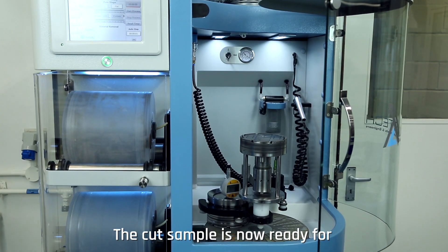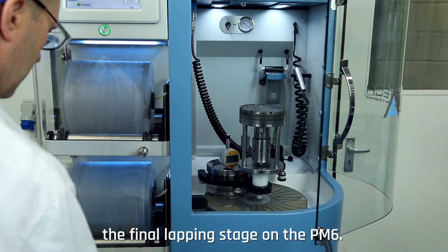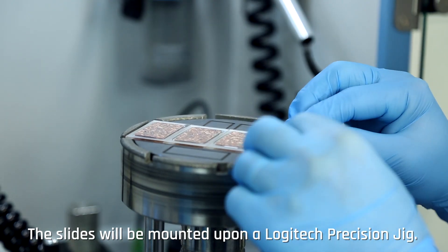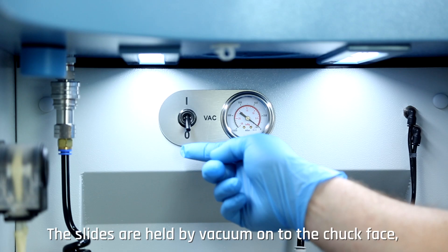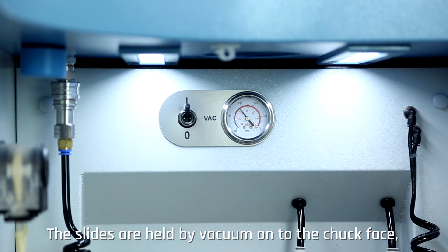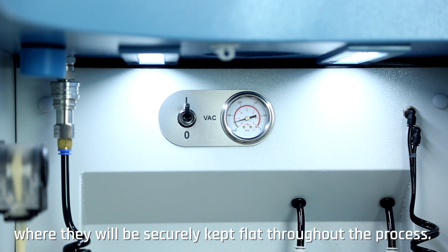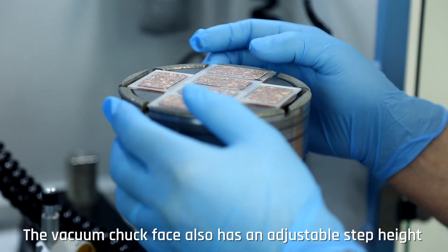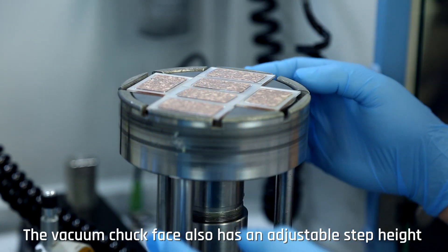The cut sample is now ready for the final lapping stage on the PM6. The slides will be mounted upon a Logitech precision jig. The slides are held by vacuum onto the chuck face, where they will be securely kept flat throughout the process. The vacuum chuck face also has an adjustable step height for high levels of accuracy.